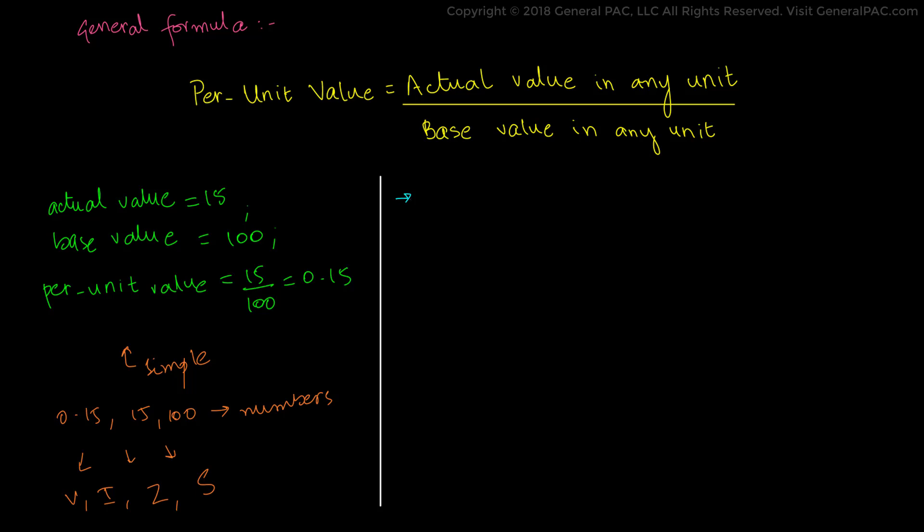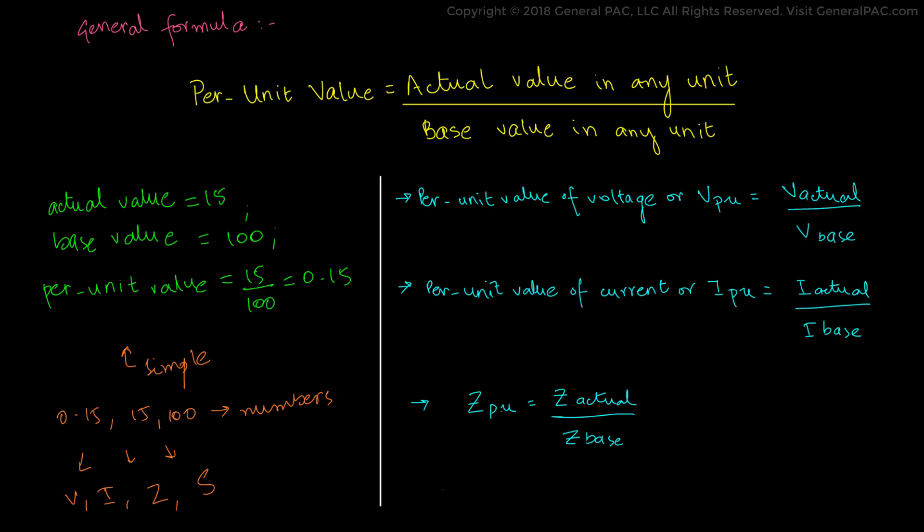Which means that the per unit value of voltage is equal to the actual value of voltage divided by the base value of voltage. Similarly, the per unit value of current is equal to the actual value of current divided by the base value of current. And the same goes on for impedances and power.